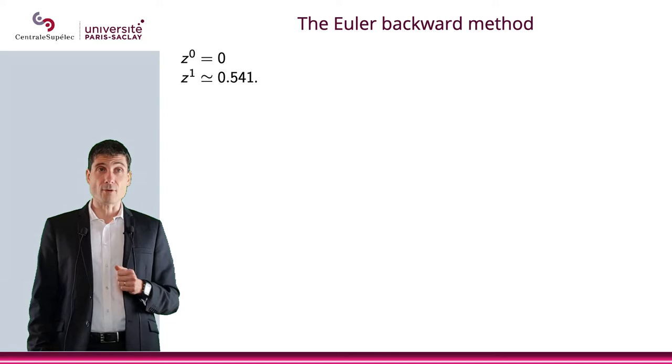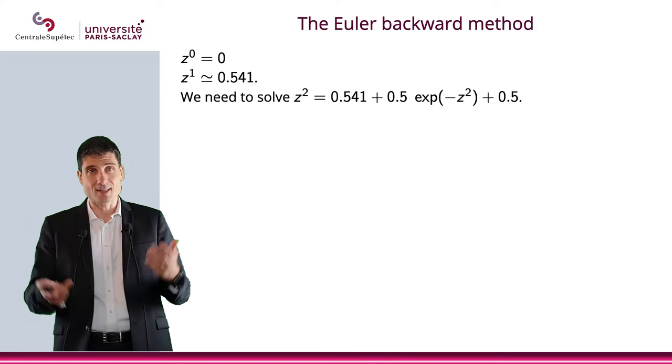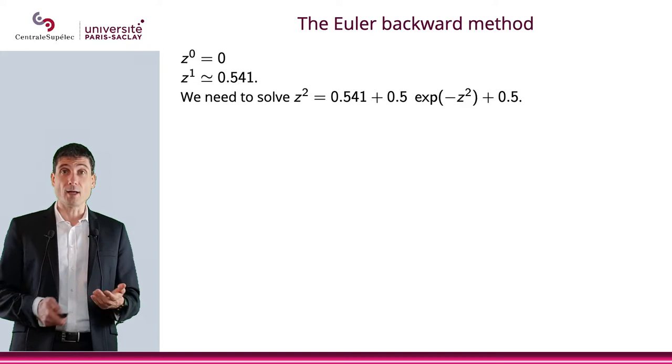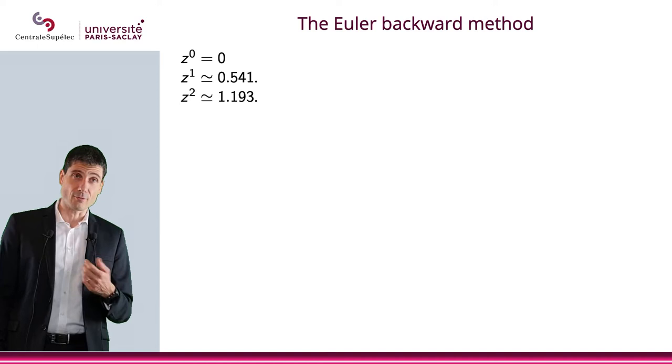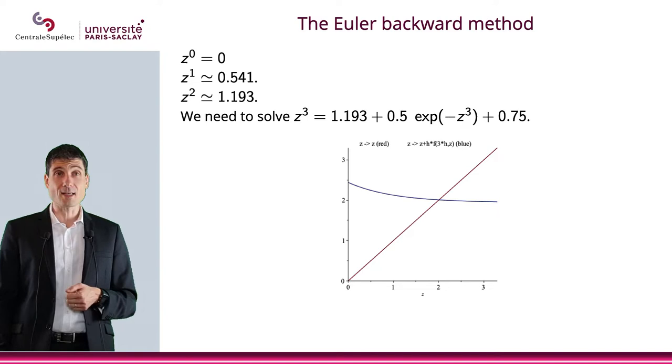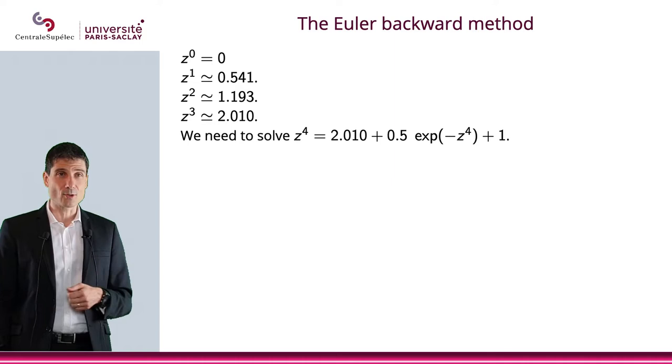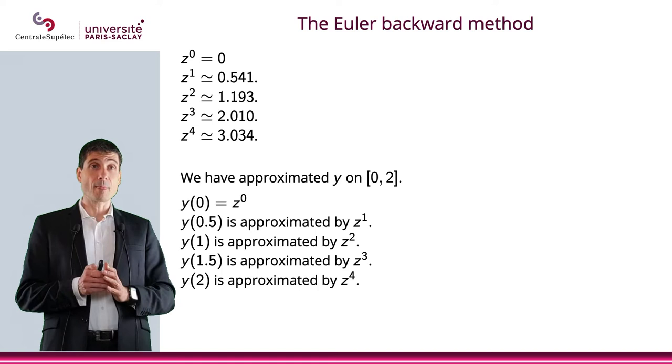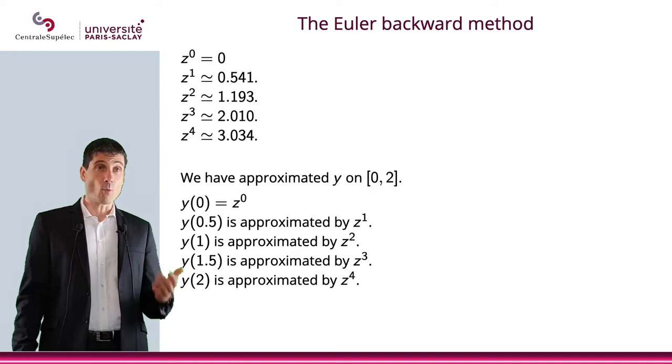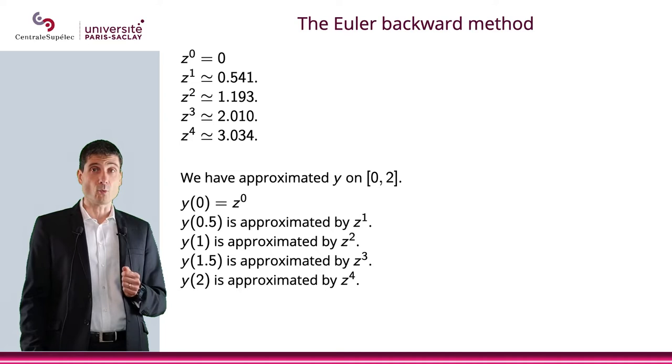Let's solve for z² = 0.541 + 0.5e⁻ᶻ² + 0.5. I solve this numerically and find z² = 1.193. I keep going. Let's solve for z³, which will be approximately 2.01. I find z⁴ = 3.034. What I'm saying is that I have approximated my y on [0,2]. y(0) is approximated by z⁰, y(0.5) by z¹, and so on, all the way to y(2).